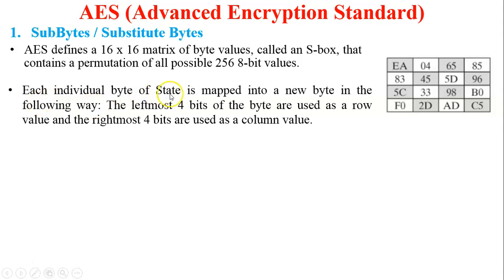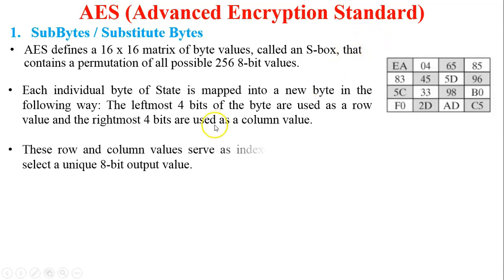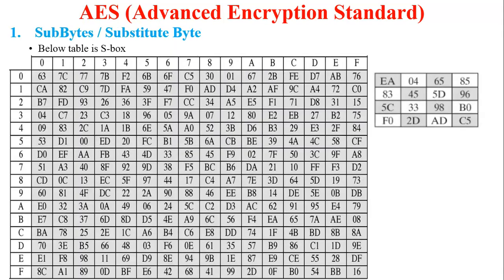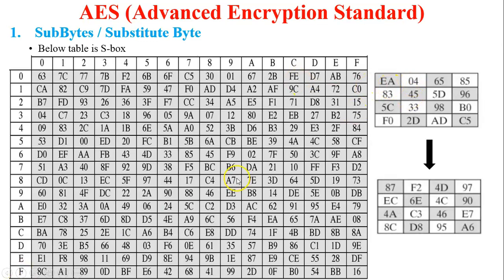Each individual byte of the state is mapped to a new byte as follows: the leftmost four bits of the byte are used as the row value, and the rightmost four bits are used as the column value. For example, the byte EA — E is the row and A is the column. Where E and A intersect, it produces the value 87. So EA is replaced by 87.